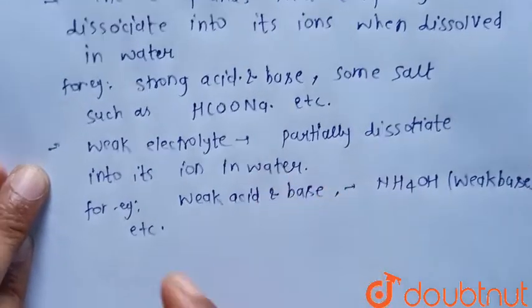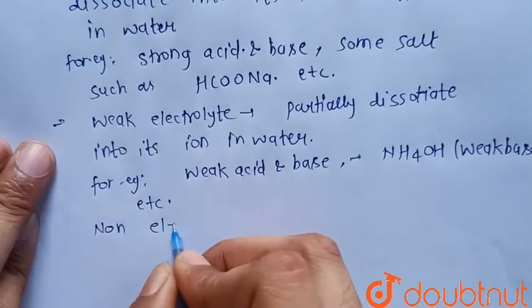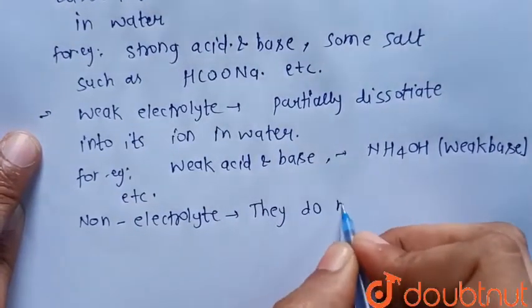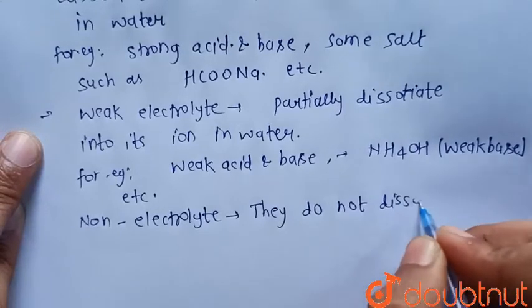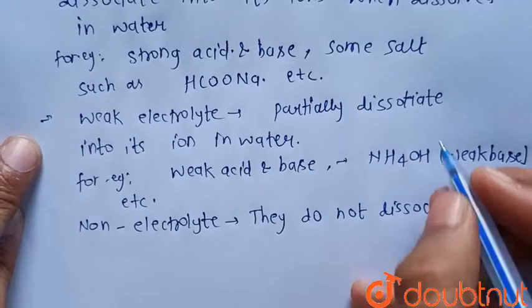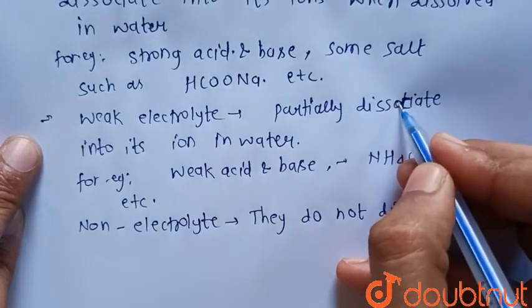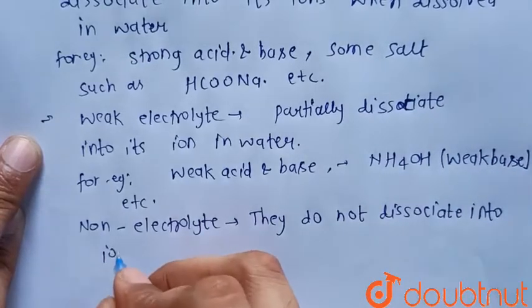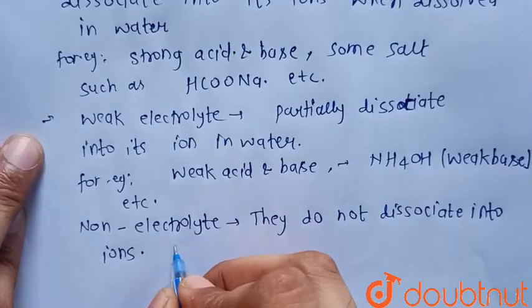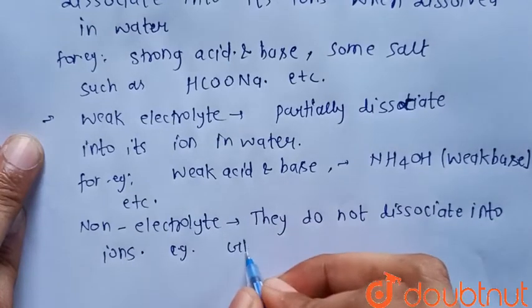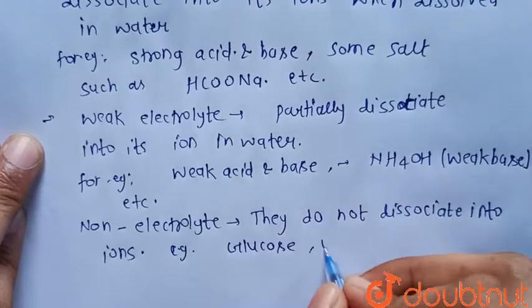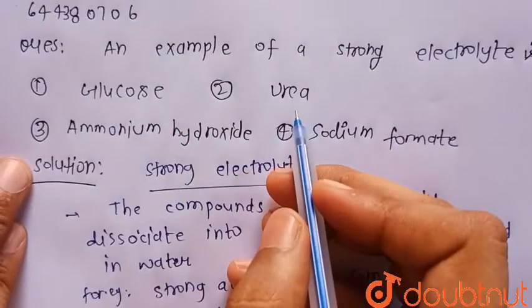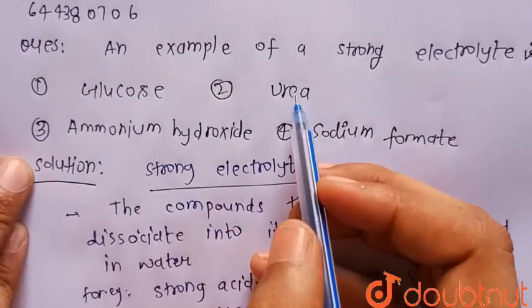There are also non-electrolytes, which do not dissociate into ions when dissolved in water. Examples of non-electrolytes include glucose and urea. We can clearly see that glucose and urea are non-electrolytes because they do not dissociate into ions when dissolved in water.